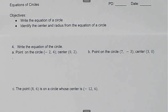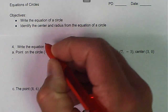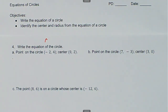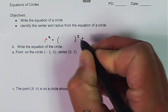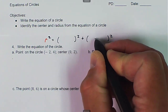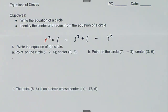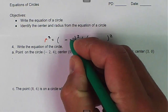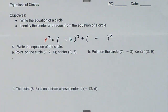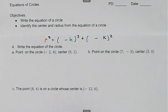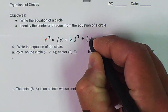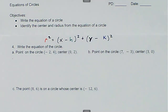We are talking about equations of circles and we want to be able to write the equation of a circle from given information. The radius squared is going to be equal to two quantities squared and added together, and the sign in the middle of those quantities is always going to be subtraction. Then we have h and k, which is our center point, and a given x and y point that is a point on the circle.